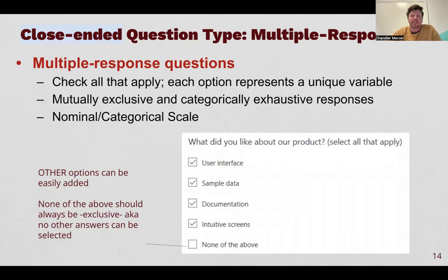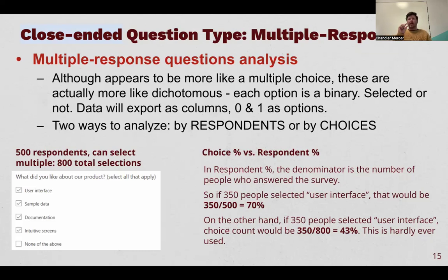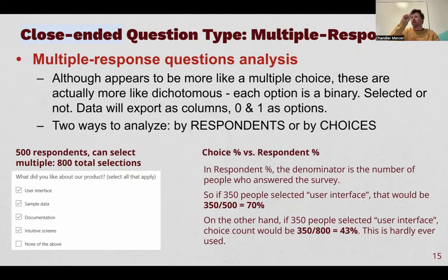Although a multiple response question appears to be multiple choice, there are actually a bunch of small dichotomous options. Each is a binary in your data. When you export your data, there will literally be columns for each option, and each column will either be zero — unselected — or one — selected. In this example, there'd be one column for user interface, one for sample data, one for documentation. As opposed to a multiple choice question where there's just one column and the answer is one of the numbered options.